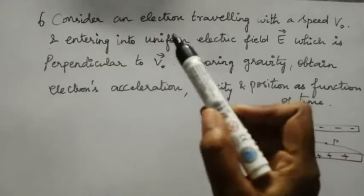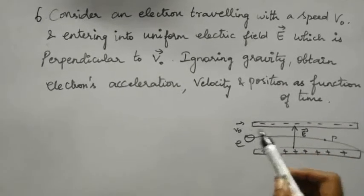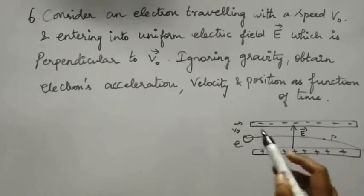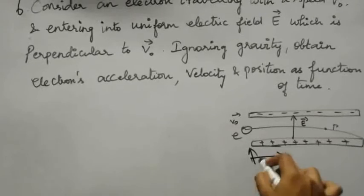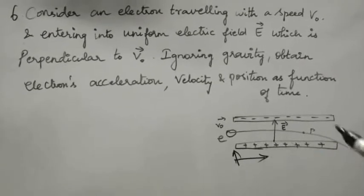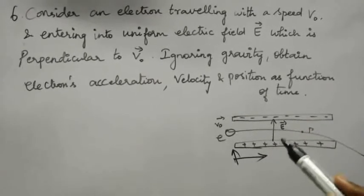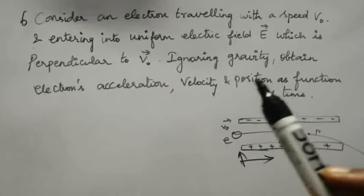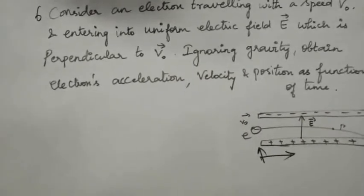An electron is traveling with speed V₀, moving and entering into the electric field. The electric field is perpendicular to V₀. If V₀ is along the x-direction, the electric field should be pointing towards the y-direction — so it is perpendicular. The electric field points outwards from the positive charge and ends at the negative charge. We have to find the acceleration, velocity, and position of the electron within this electric field.